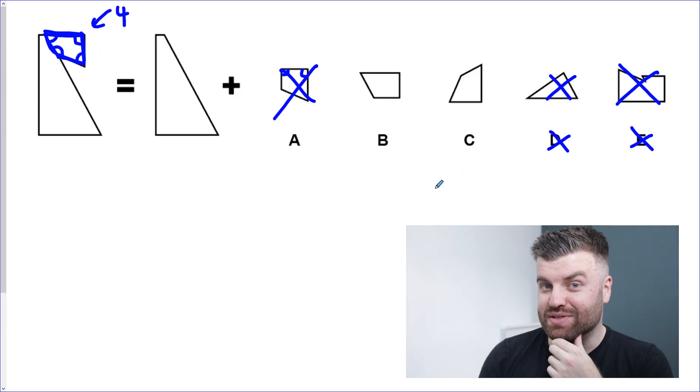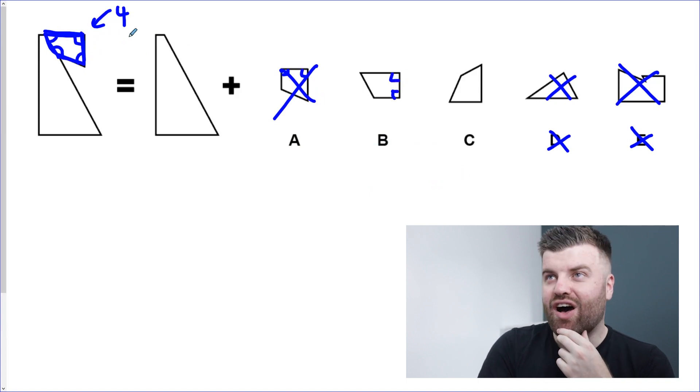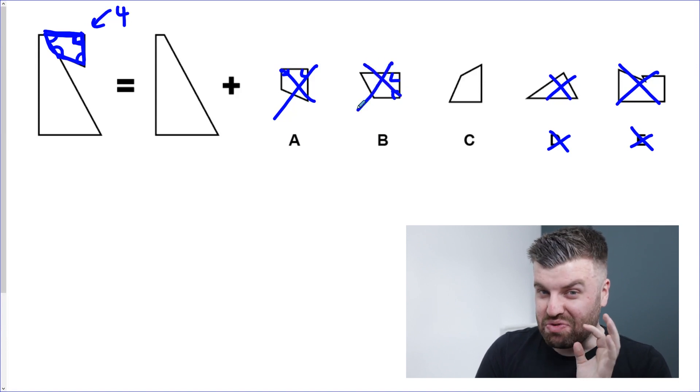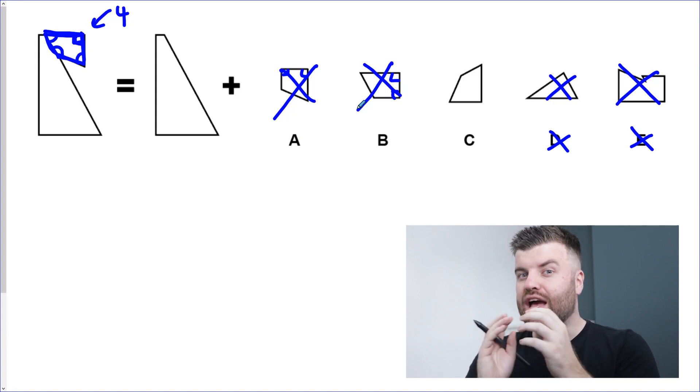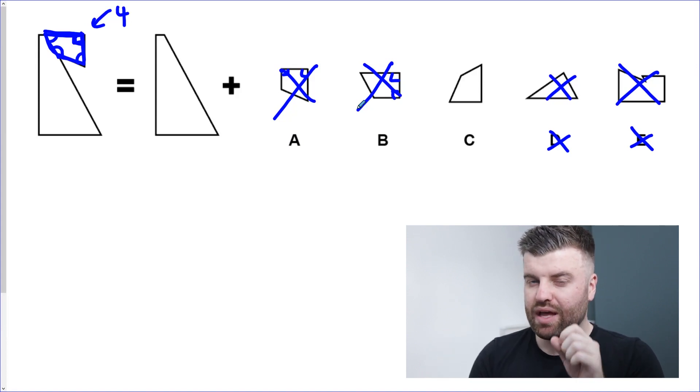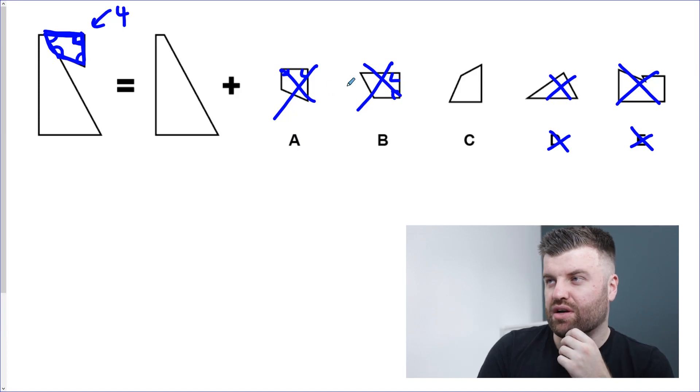Now out of those two, has anyone noticed anything? Because I have. B has two right angles. Our missing shape cannot possibly have two right angles. It has one right angle in the corner, and the others are either obtuse or acute. The answer can't be B. So if you're really stuck, counting the number of sides and checking the angles—obtuse, acute, right angle—is going to really help you carry on your deduction. So once more we've managed to get rid of all of the wrong answers and we're left with C.